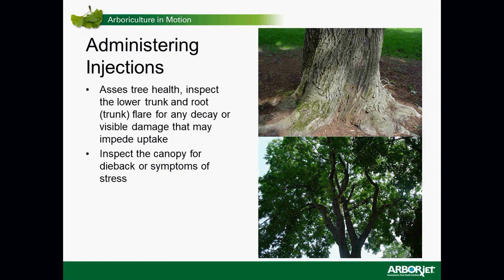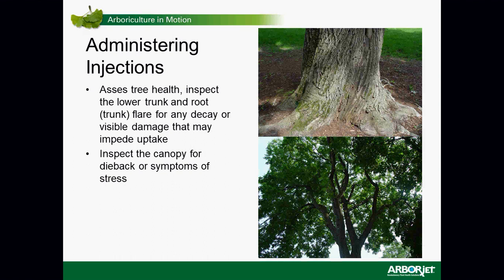Administering injections: first, assess tree health. Inspect the lower trunk — you're looking for any defects or injuries to the trunk flare, sometimes called root flare. Avoid any areas with defect or decay in the lower trunk or root flare. Then inspect the canopy for dieback or symptoms of stress; this will help you evaluate whether these are good candidates for treatment.